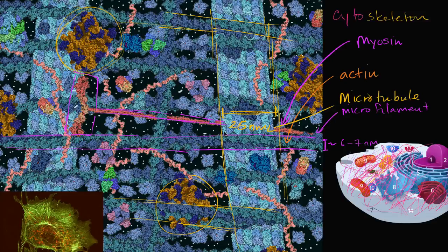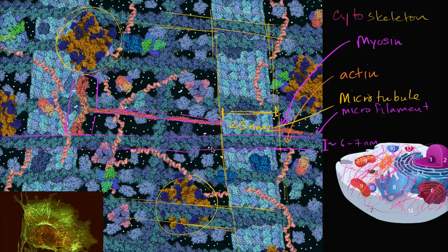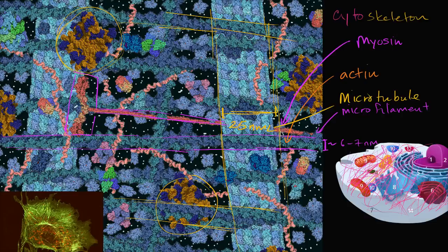And in animal cells, the things I've just described are found in most cells. But in animal cells, you will also find things called intermediate filaments that are actually in between these two in size, which also help maintain shape and do other things.